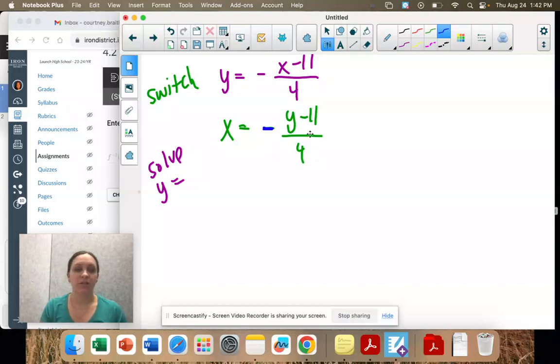We're taking y minus 11 divided by 4. We have this negative out here though, and I want to get rid of it because it could go to the numerator or denominator. I'm going to move it down here with the 4. So when I take the opposite operation, we're going to multiply. I'm going to multiply by negative 4 to get rid of that negative sign. These all cancel and you're left with just the numerator.